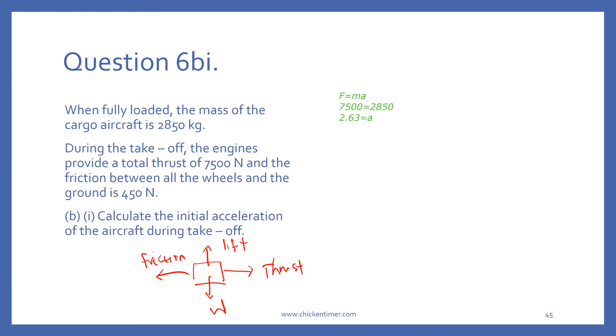Force equals mass times acceleration. You gave me 7500 equals to 2850 something. The friction between the wheels and the ground is 450. Do you think there's something missing? The answer is not 263. Do we need to think about this 450? Yes.